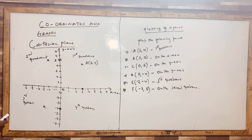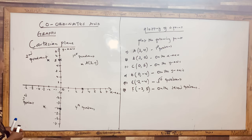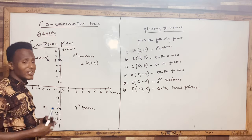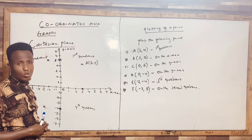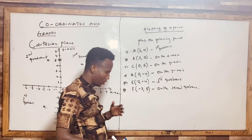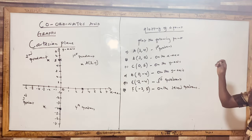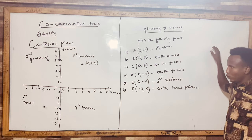As we go ahead in Form 1, remember: on the x-axis, y is equal to zero. On the y-axis, x is equal to zero. Don't forget that. This is how you plot a point on the Cartesian plane and name the quadrant in which it falls.